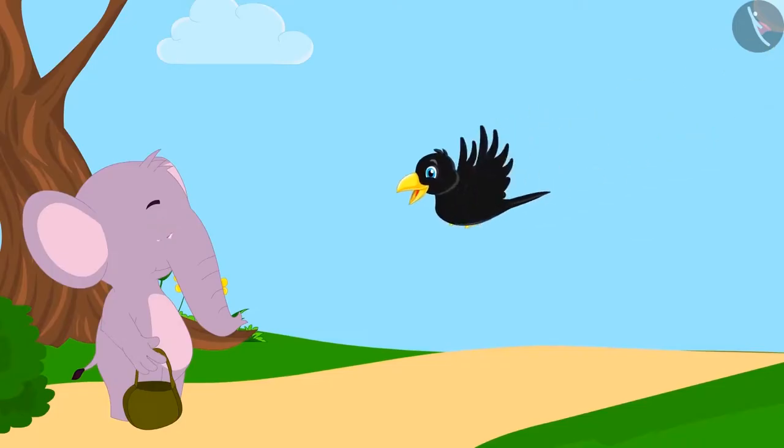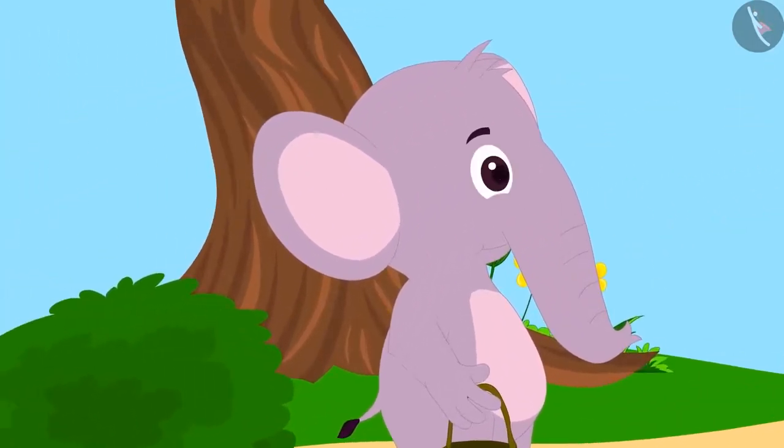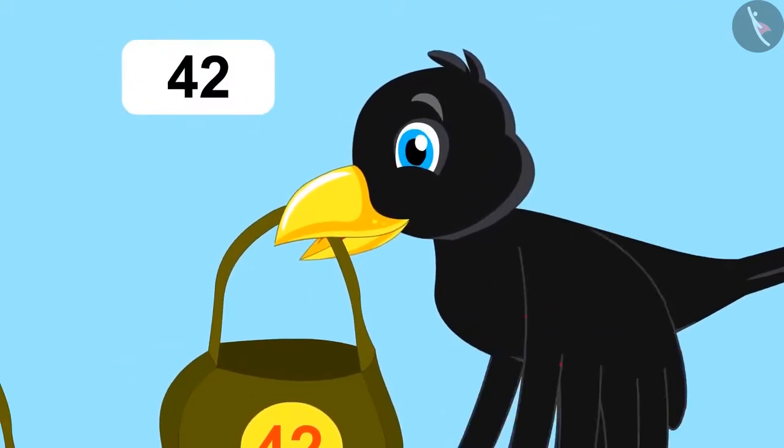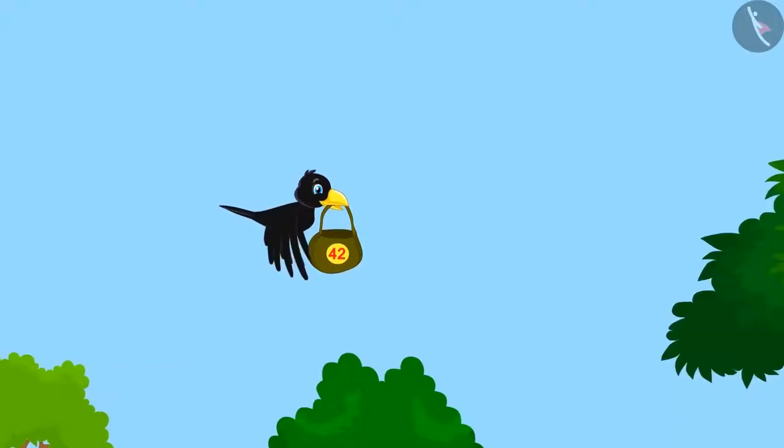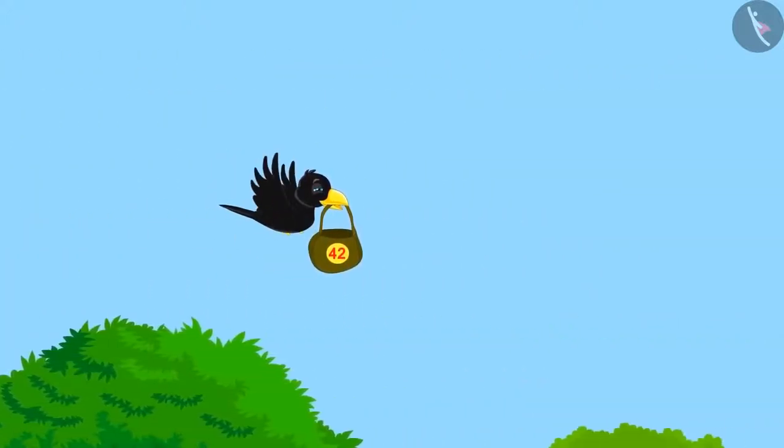The crow left again in search of more stones. This time, he went to his friend Appu Elephant. Appu is very strong. He gave altogether 42 stones to the crow. The crow was very happy and flew towards the pitcher.